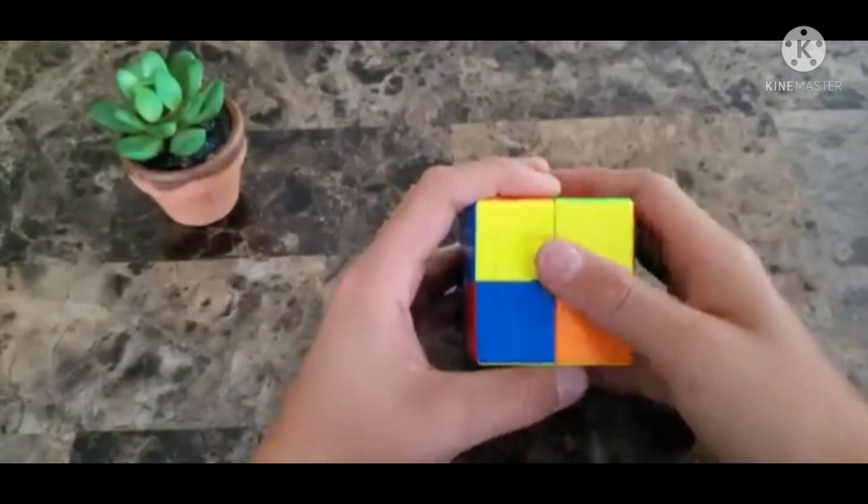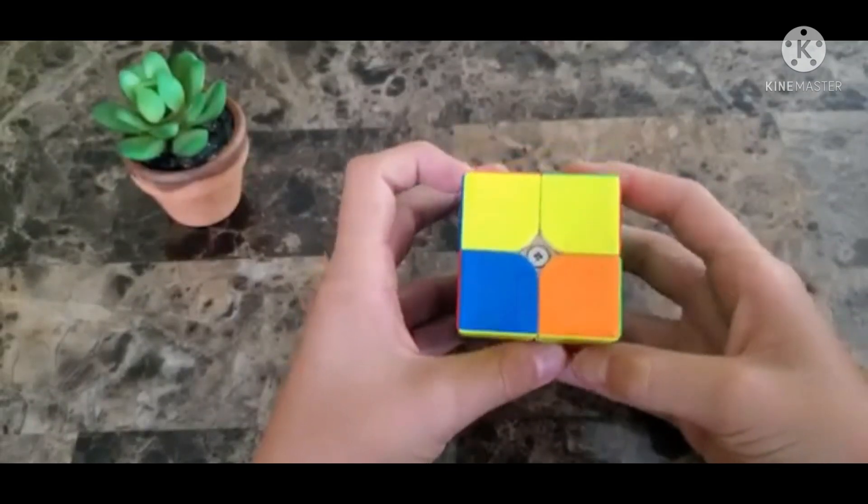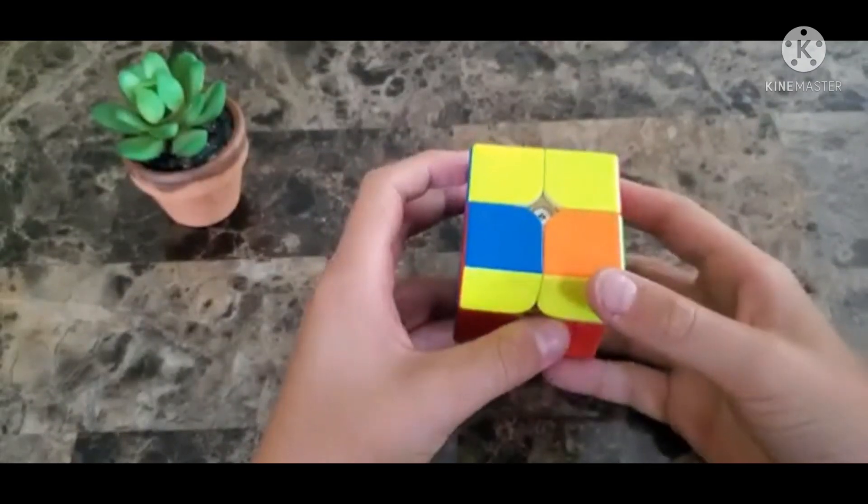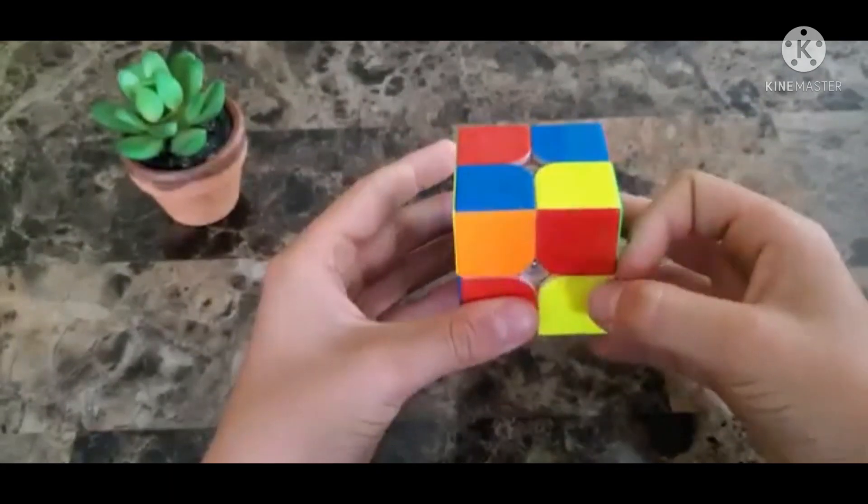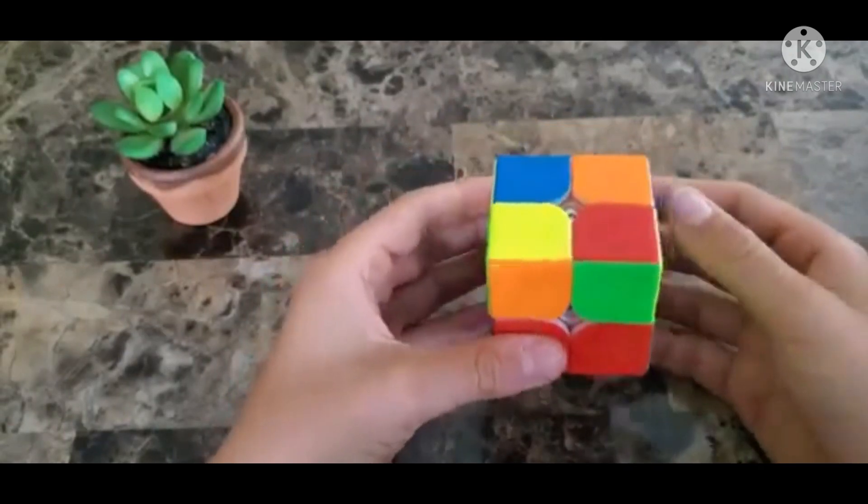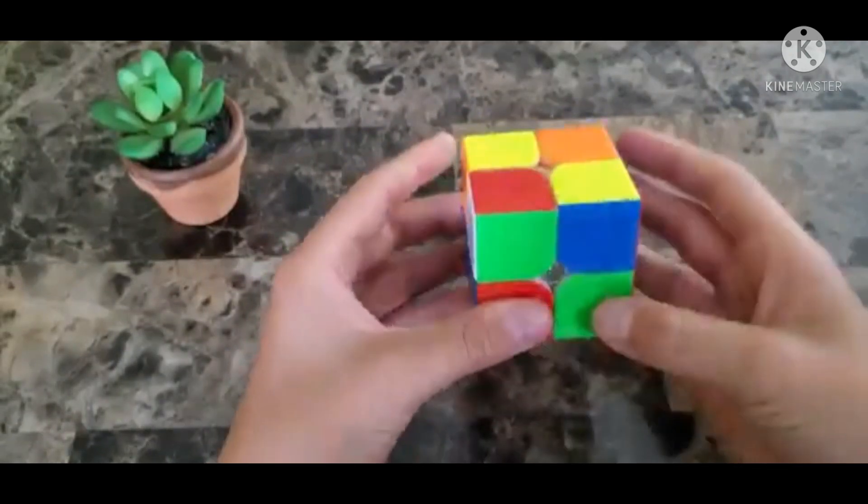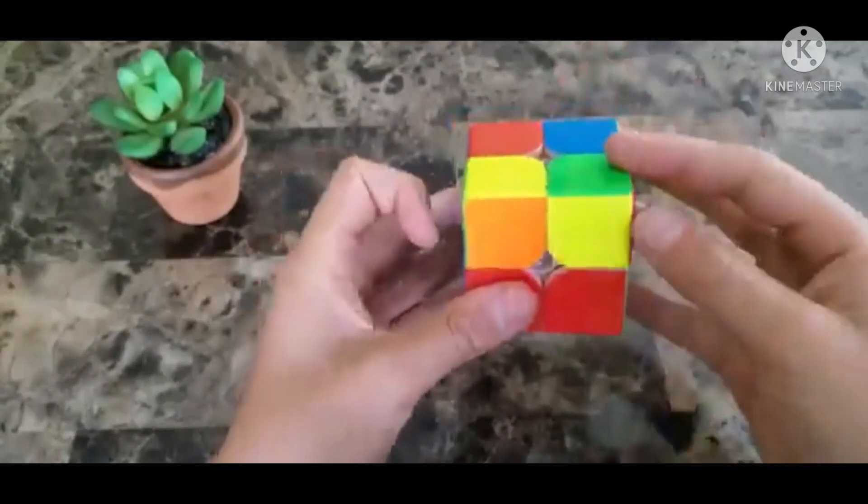When you have the two yellow pieces on the top and they're in a bar, you're gonna want to hold it just like this and do the same algorithm. Then you'll get it to the one piece and then move it to the same place and do it again.